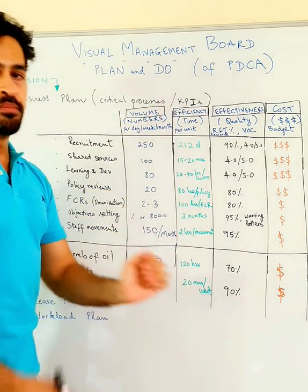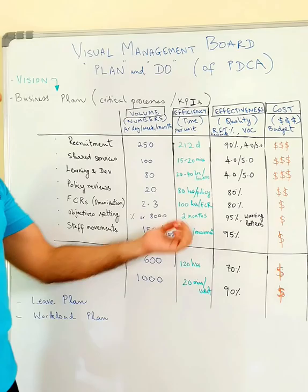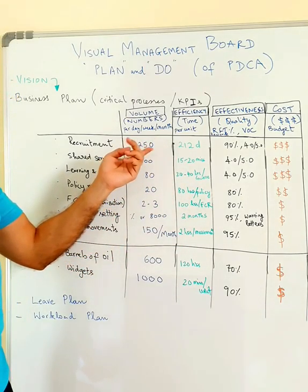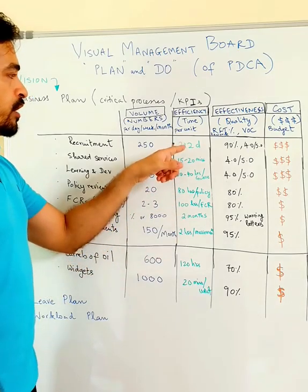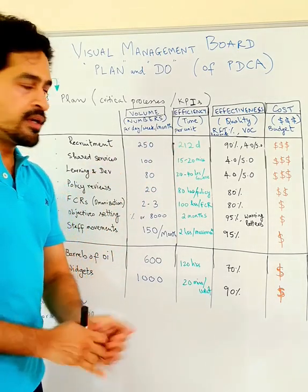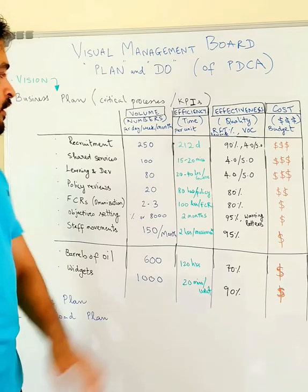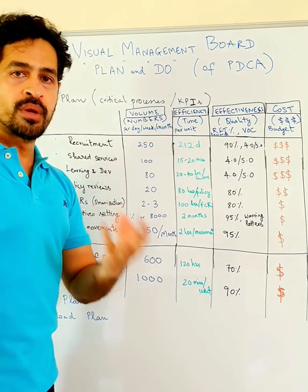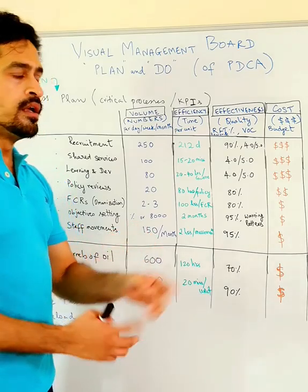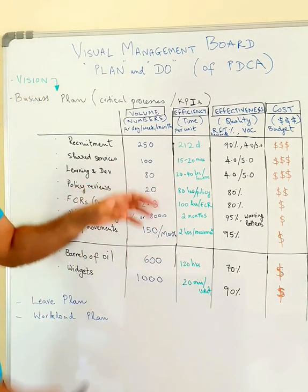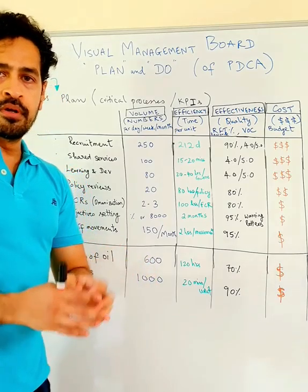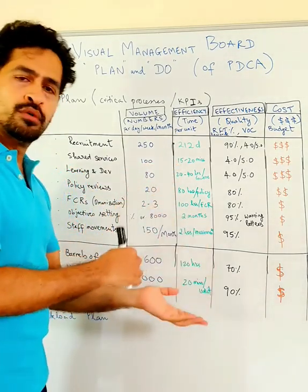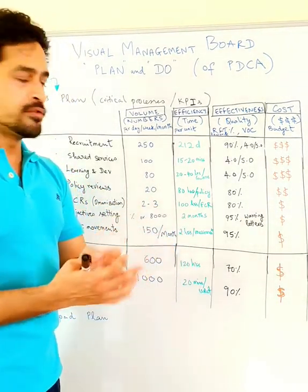The second component is efficiency — how efficient are we at delivering these numbers. To recruit one Omani mature hire, it takes about 212 days. To answer one call, it takes about 15 to 20 minutes to answer the query, depending on the call type. On average it takes about 15 to 20 minutes; some calls could be longer, some shorter.